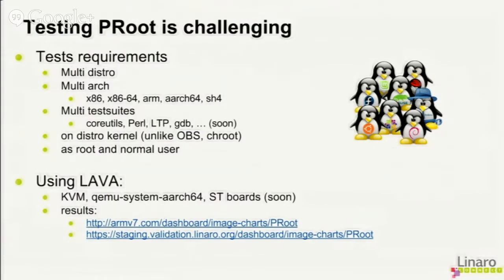It's difficult to test P-Roots because we want to be multi-distro — testing on CentOS, Fedora, Debian, Ubuntu, Arch Linux, Gentoo, Slackware, etc. We want to test on multi-arch: x86, x86-64, ARM, AArch64, and SH4. We need multiple test suites because P-Roots intercepts all programs, so it has to work with everything. It has to run as both root and a normal user. Since P-Roots is based on ptrace, we need to run on the right kernel — you can't just chroot into a rootfs and test it. So we use LAVA, mainly KVM, and also QEMU system mode. Results are available on staging.arm7.com.